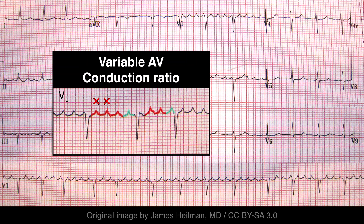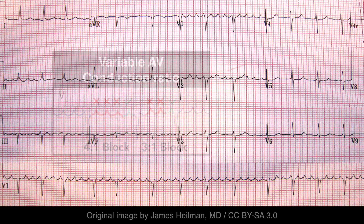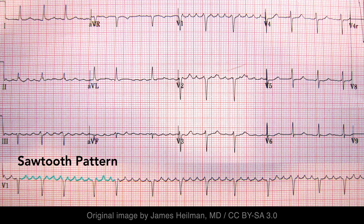In this case, the conduction is variable, alternating between 3:1 and 4:1, meaning every third or fourth flutter wave conducts to the ventricles. To summarize the most important findings: atrial flutter classically results in a sawtooth pattern, and conduction delay at the AV node typically results in a degree of AV block.